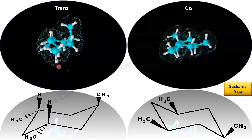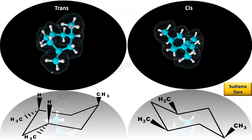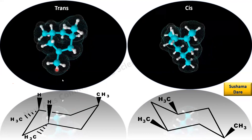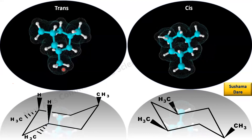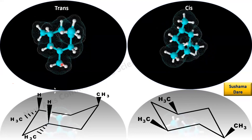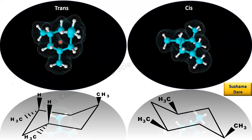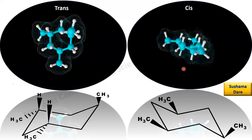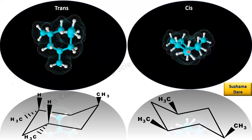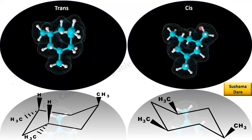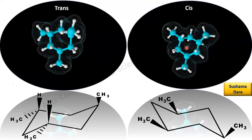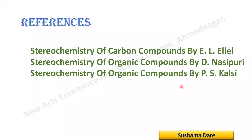In the trans molecule, the axial methyl group and the two equatorial methyl groups are visible. Viewing from different angles, you can readily see the plane of symmetry. Similarly, in the cis molecule, all methyl groups are equatorial and the plane of symmetry passes through carbon 1 and carbon 4. For further details, refer to the reference books.